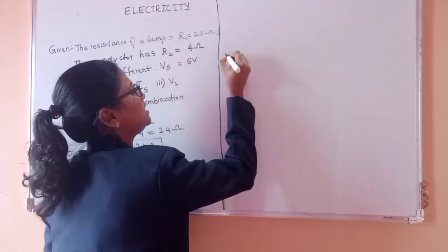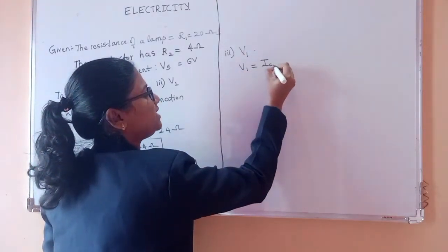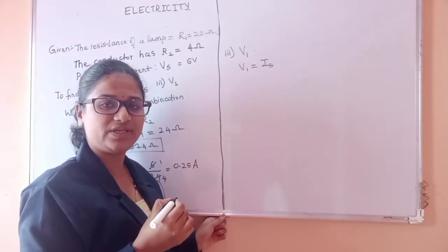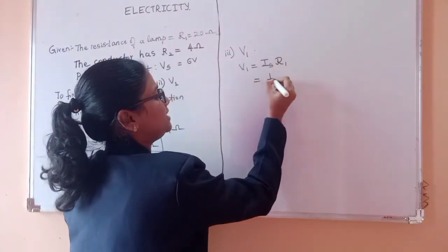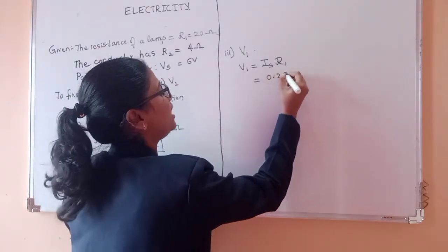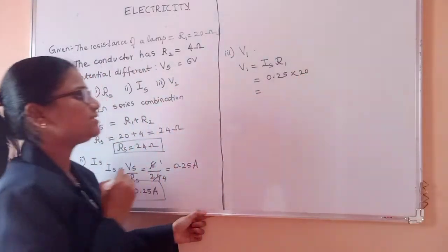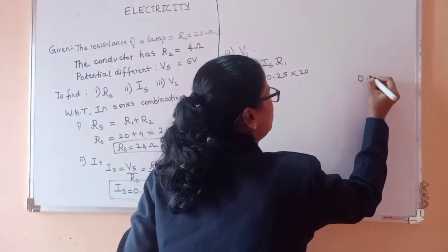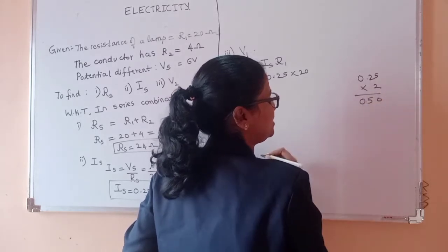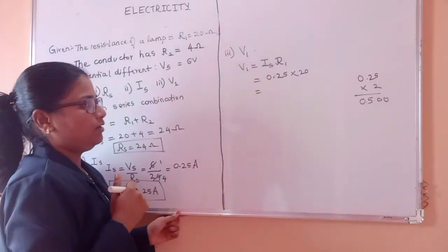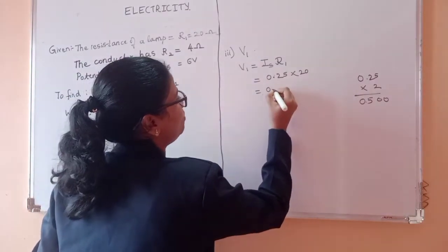Then third they asked regarding V1. V1 is equal to I into Is, because current remains constant in series combination. That is why we should consider it as total current Is into R1. Is is 0.25, R1 is nothing but 20. So when you simplify, 0.25 into 20, how much you get? 0.25 into 2 when you do, you will get around 0.5, 0.500.